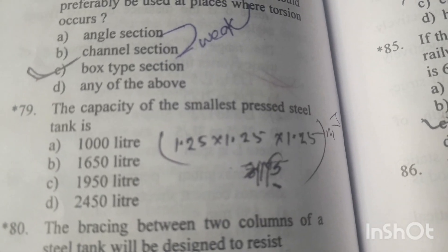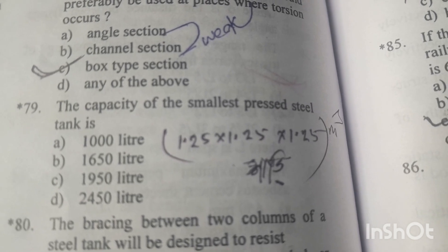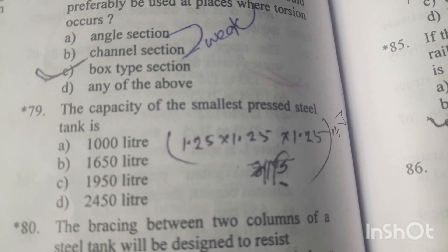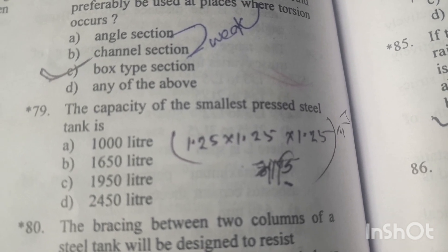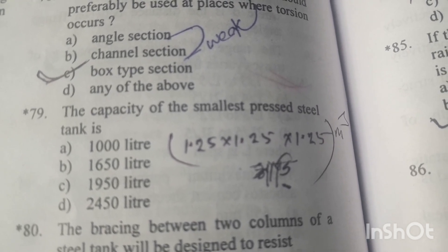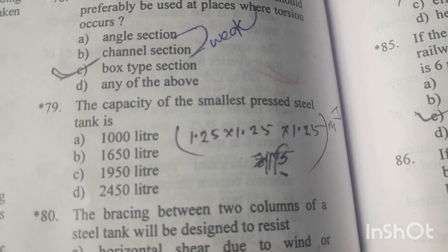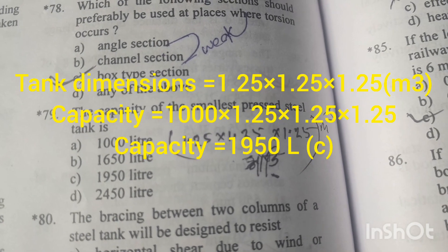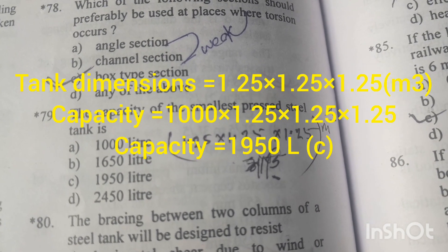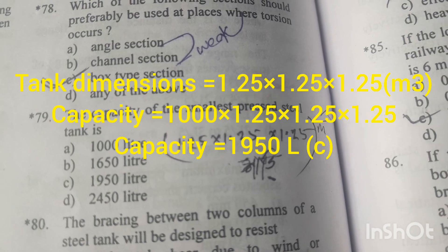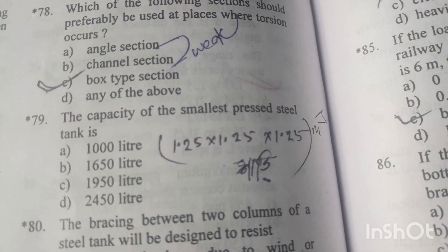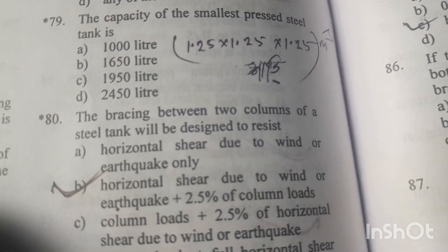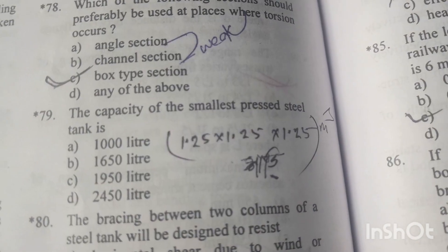Question number 79: The capacity of the smallest pressed steel tank — its cubical dimensions are 1.25 × 1.25 × 1.25 m. If we calculate, the volume will be 1950 liters. Option C is the right answer.